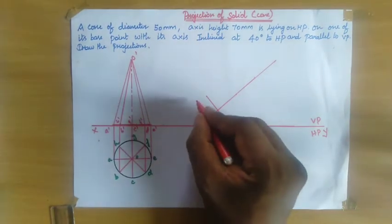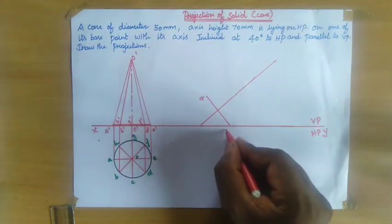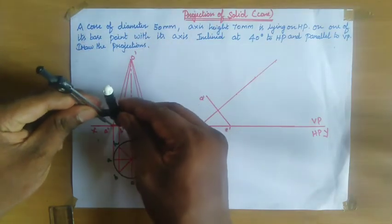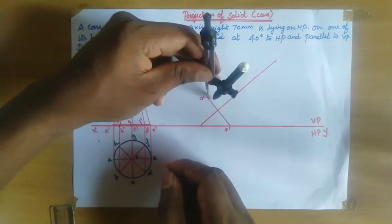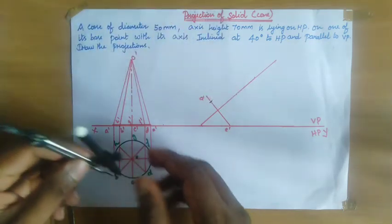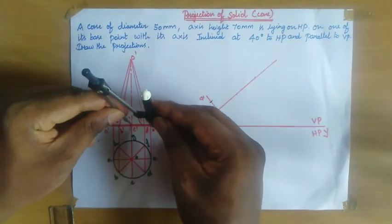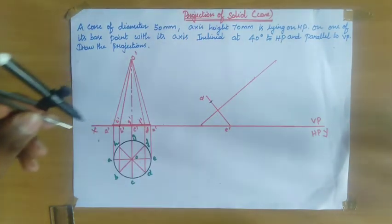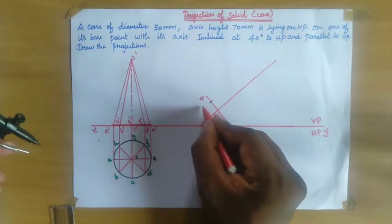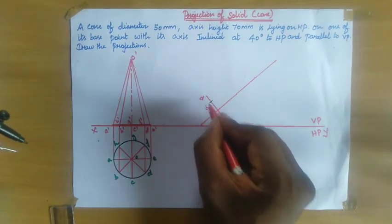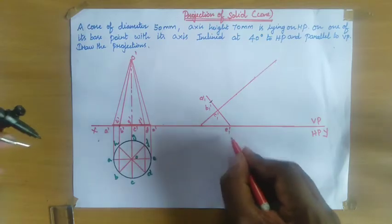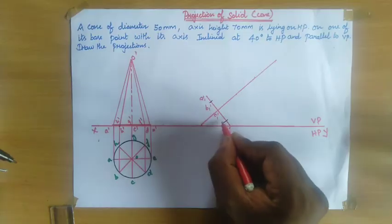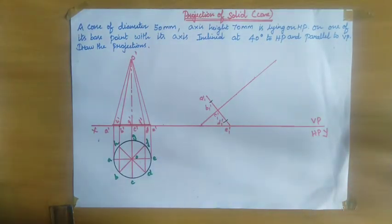Name this point as A' and this point as E'. Now take your compass and measure the distance from A' to B'. With A' as center, cut an arc. Again, with C' as center, take the measurement of C' to D'. Name the new points as A1', B1', C1', E1'. With C1' as center, cut an arc and name that point as D1'.